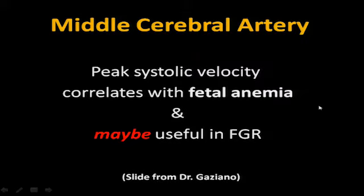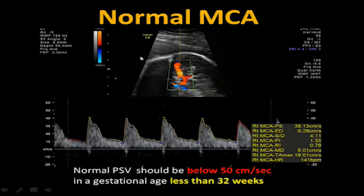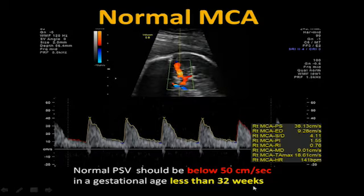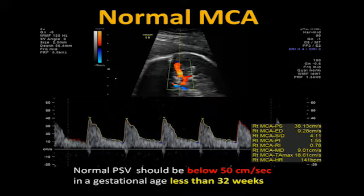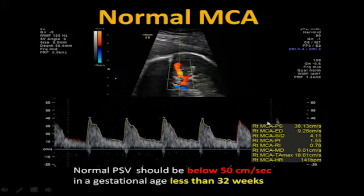The peak systolic velocity correlates with fetal anemia and may be useful in fetal growth restriction. Normal peak systolic value should be below 50 cm/s at gestational age less than 32 weeks — a good rule of thumb. Always take the highest value even if you do two or three measurements. Go to perinatology.com under MCA peak systolic values, put in the gestational age, and it'll tell you how many multiples of the mean (MOMs) it is — that's the easiest way instead of hunting for a chart.